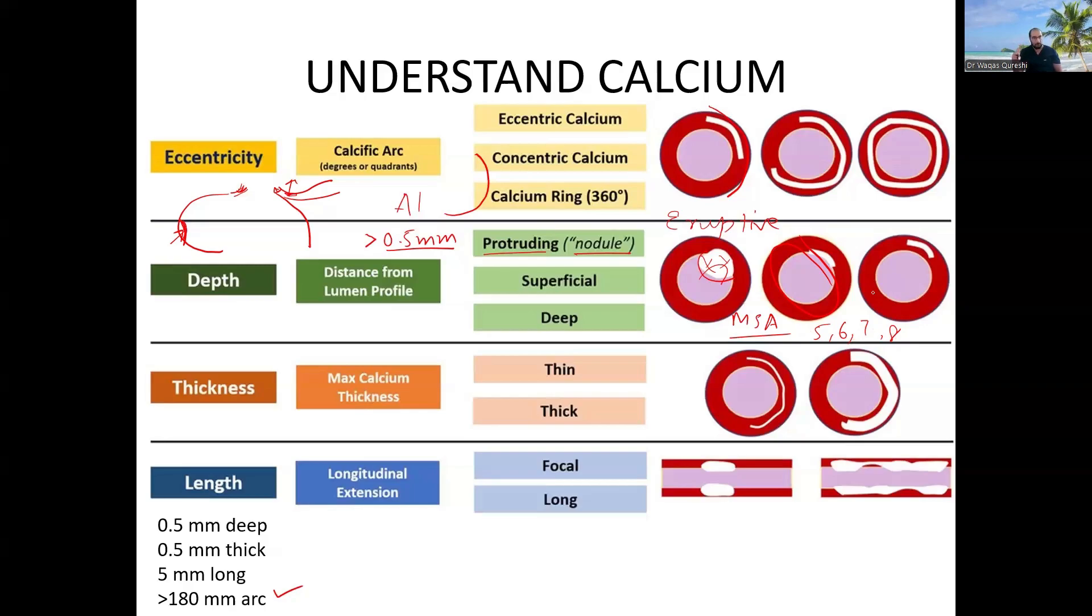Okay, so that was the depth and protruding nodule. Number 3 is the thickness. So, there are studies which have looked at if the thickness is less than 0.67 mm, which means they are thin, the response to balloon angioplasty is great.